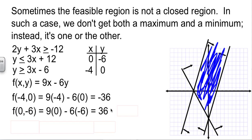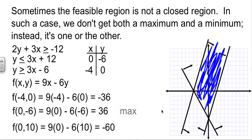One of these is a max, one of these is a min, but I don't know which way the function goes. So, I'm going to pick another point inside the region. The only time I have to do this is when it doesn't close up. I'm going to pick the point 0, 10. It is inside the region. If I plug in 0, 10, 9 times 0 minus 6 times 10 is negative 60. Well, that's clearly smaller than either of these. So, I can't say I have a minimum, but I do have a maximum.